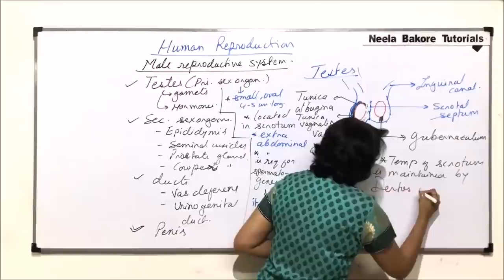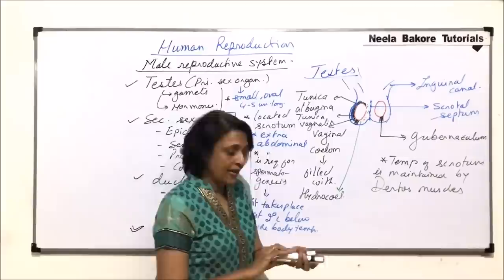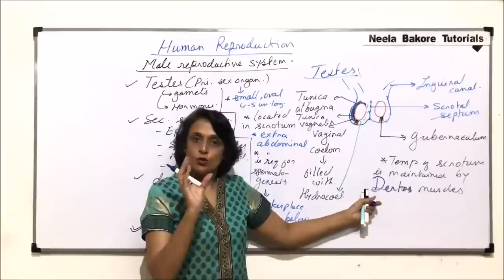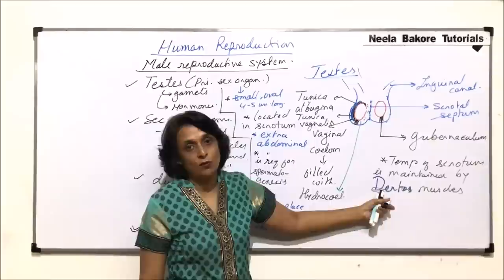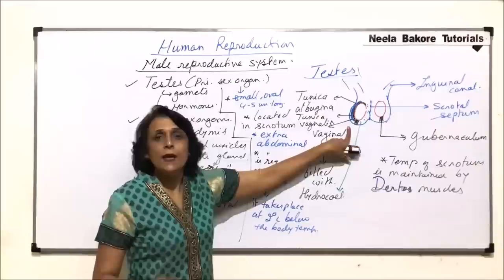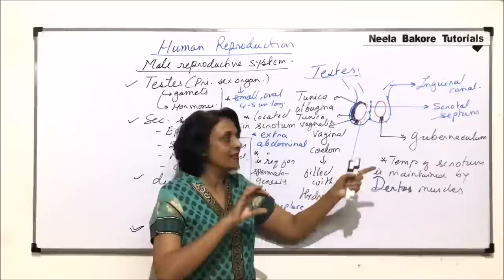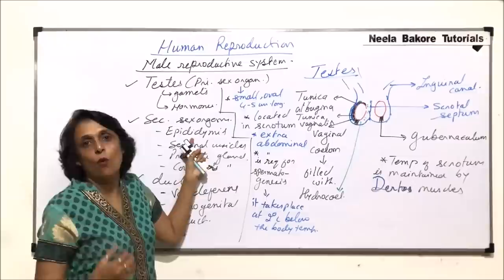The structures holding the testis in position are the gubernaculum and the spermatic cord. The temperature of the scrotum is maintained by the muscles of the scrotal sac. These are called Dartos muscles — thin skeletal muscles present in the scrotum. So the scrotum is a thin skin pouch but it also has this muscle layer.